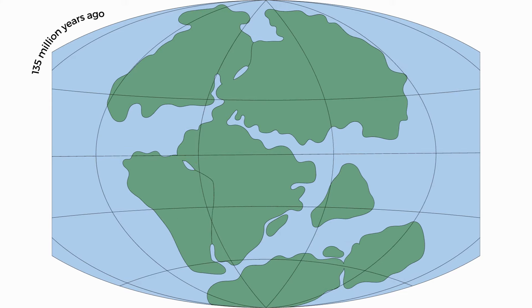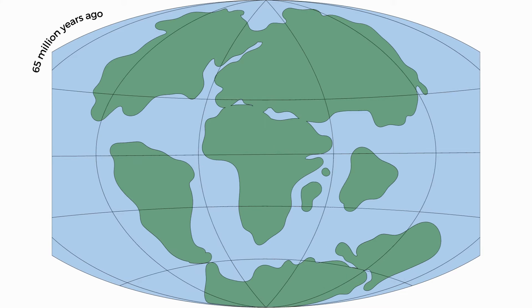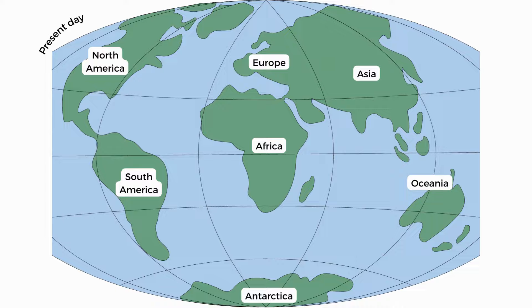The land masses continued to move until we ended up with our continents that we're familiar with. This movement is still happening, which means that in a million years' time, things will probably look different again.